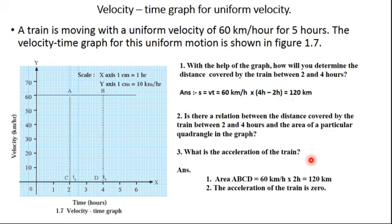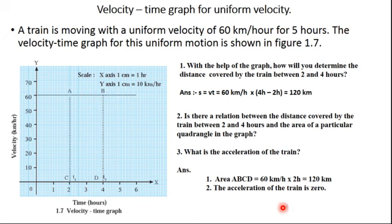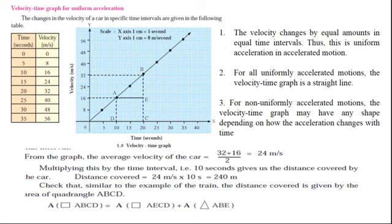The distance comes out to 120 kilometers, the same answer. Now the third question: what is the acceleration of the train? The acceleration of the train is zero, because in uniform velocity the train never changes its velocity at all with regard to time. This completes the velocity-time graph for uniform velocity.